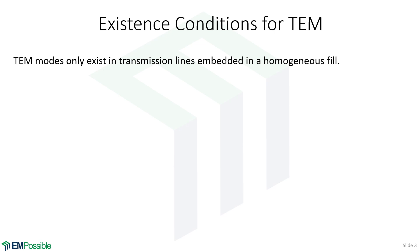Let's remind ourselves of the existence conditions for TEM. There really are two requirements. One, we need a transmission line, that is a waveguide with two or more conductors. And two, it has to have a homogeneous fill.